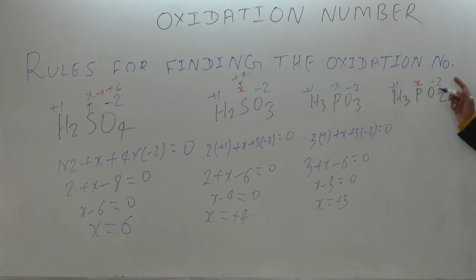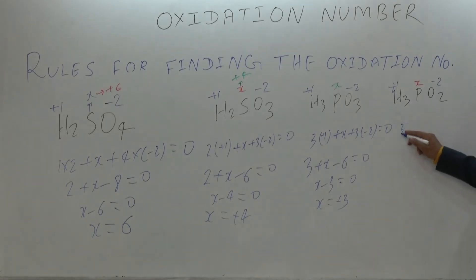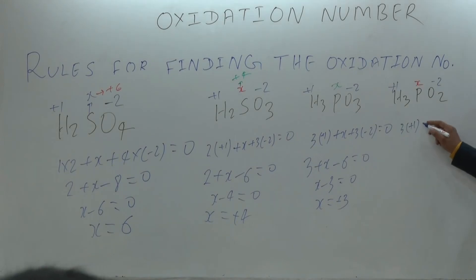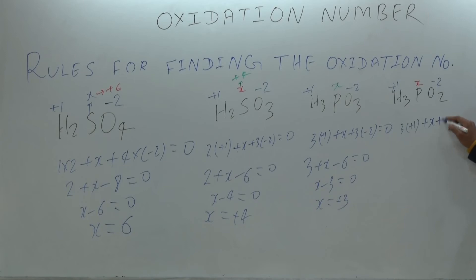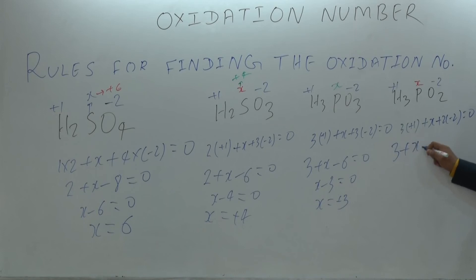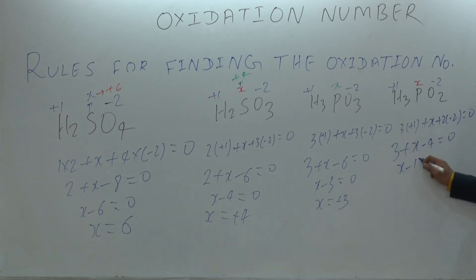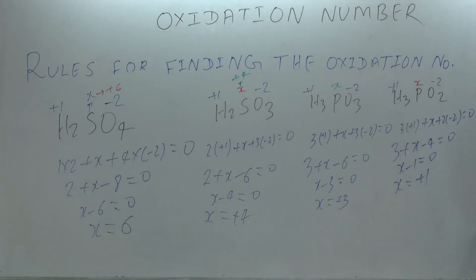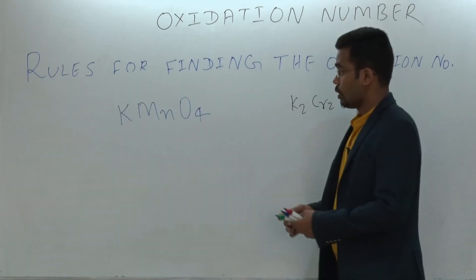For H₃PO₂, hydrogen has +1 and phosphorus is x. So: 3×(+1) plus x plus 2×(−2) equals 0. That gives 3 plus x minus 4 equals 0, so x minus 1 equals 0, meaning x equals plus 1. Therefore the oxidation state of phosphorus in H₃PO₂ is +1.